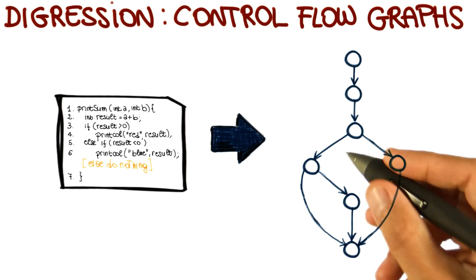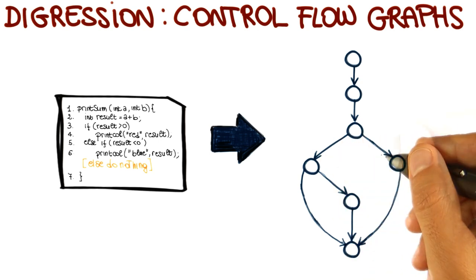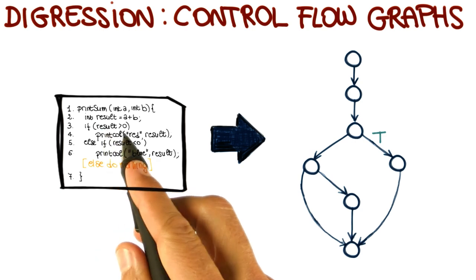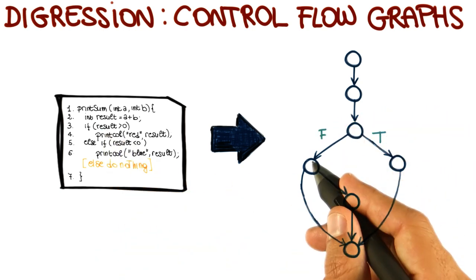In fact, normally what we do is we will label these edges accordingly. So for example here, we'll say that this is the edge that is executed when the predicate is true, and this is the edge that is executed when the predicate is false.